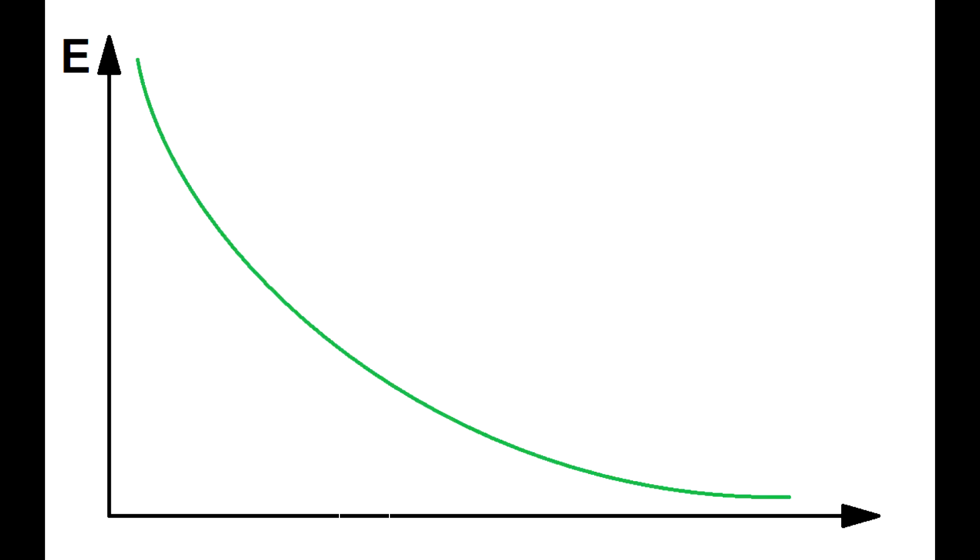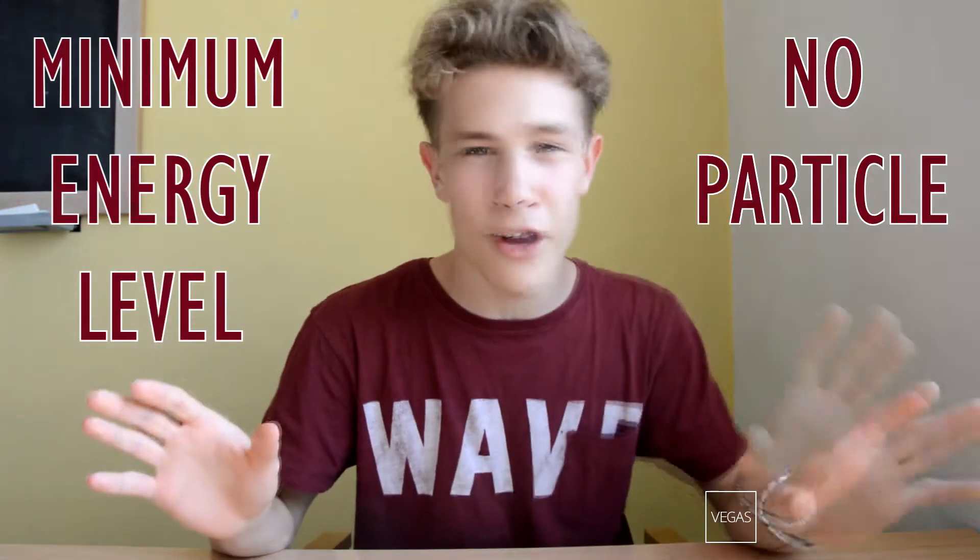For example, most fields have a structure like this one. At a high energy level, a particle appears, while at the minimum energy level, there's nothing. Okay, that makes sense. We've got a vacuum in every sense. Minimum energy level and no particle.